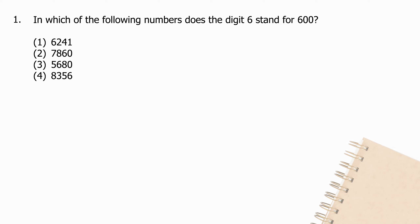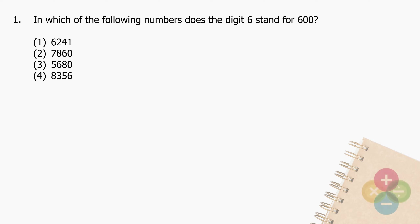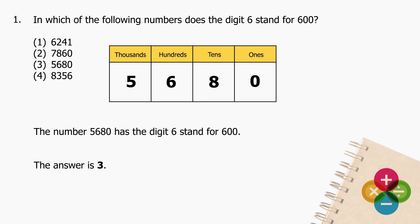Question 1: In which of the following numbers does the digit 6 stand for 600? The number 5680 has the digit 6 standing for 600. The answer is 3.